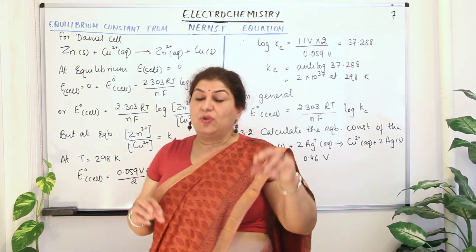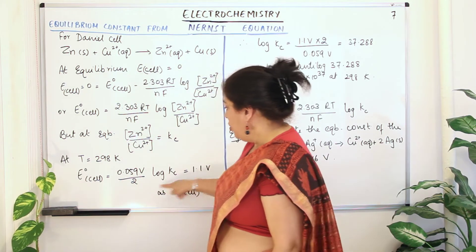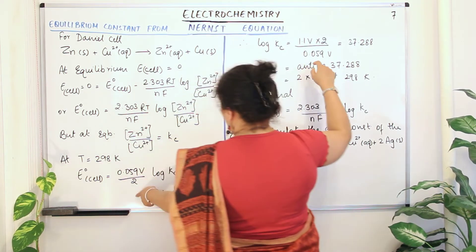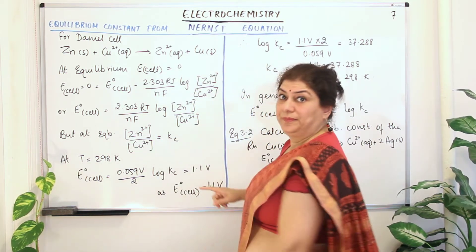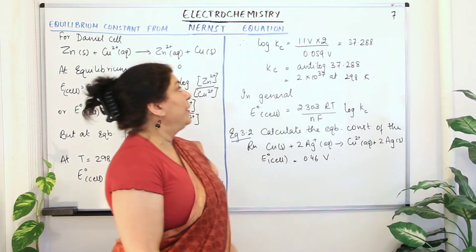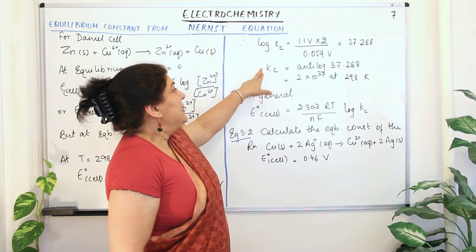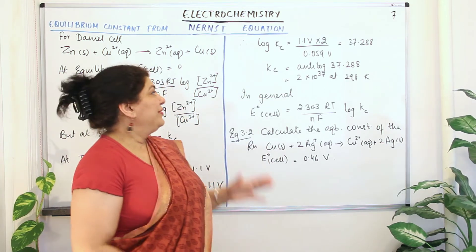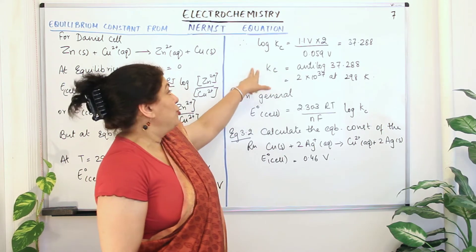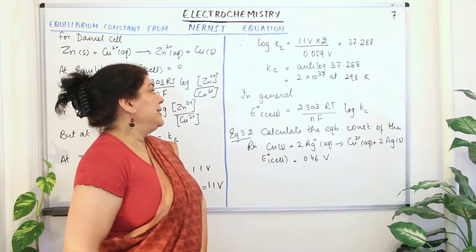From this equation, log Kc = 1.1 / (0.059 × 2) × 2, which comes out to be 37.288. Therefore Kc = antilog of 37.288, which equals 2 × 10^37 at 298 K. This is how you calculate Kc from the Nernst equation for the Daniel cell.